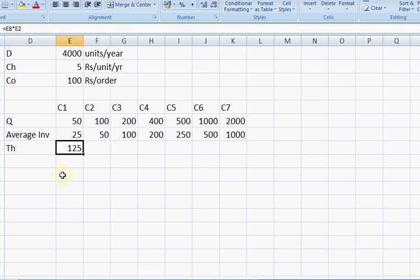My total holding cost will be equal to this average inventory multiplied by cost of holding per unit per year. So 125 rupees in this case. In the last case I need to fix up, I need to fix this dollar so that I can copy the formula.